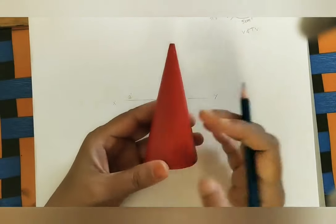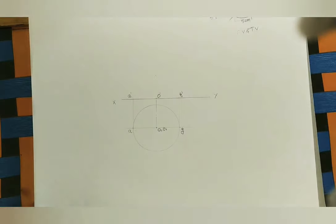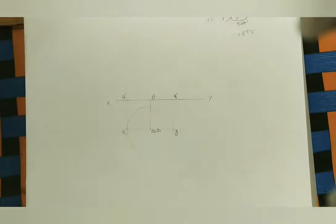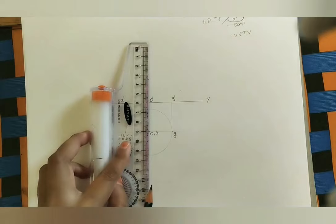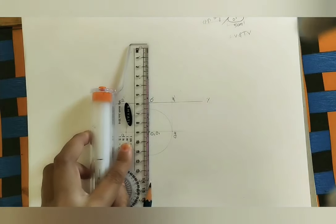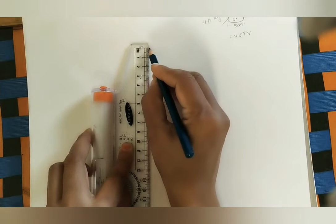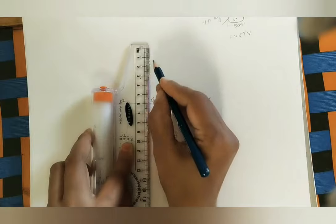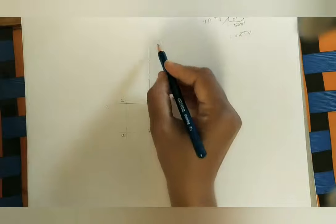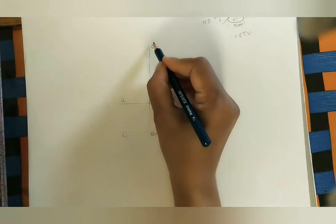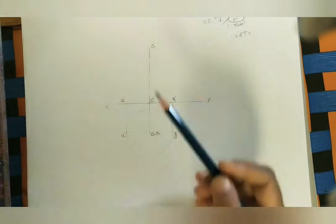We need to do the front view. In the front view, the cone looks like a triangle. We can see the entire height of the cone, which is 6 centimeters. Above the XY line, take 6 centimeters and mark this as the apex. Draw the axis line — two big lines with a dot. This apex is O1-dash in the front view. Join these two base points to O1-dash to complete the front view triangle.